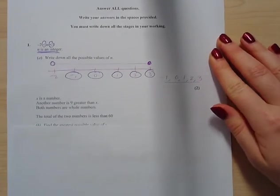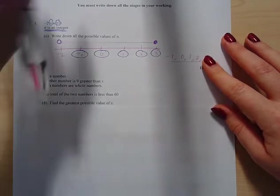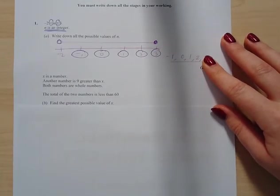For this one, x is a number. Another number is 9 greater than x. Both numbers are whole numbers. The total of the two numbers is less than 60. Find the greatest possible value of x.